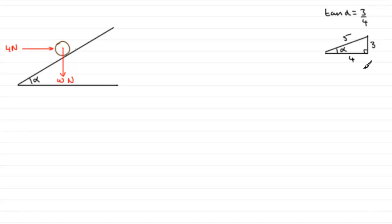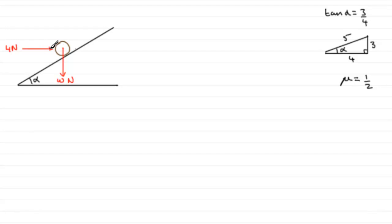We're also told that the coefficient of friction mu is equal to one half. This particle is held in equilibrium on this rough inclined plane by a horizontal force of four Newtons, and we're told that the particle is on the point of sliding down the plane.